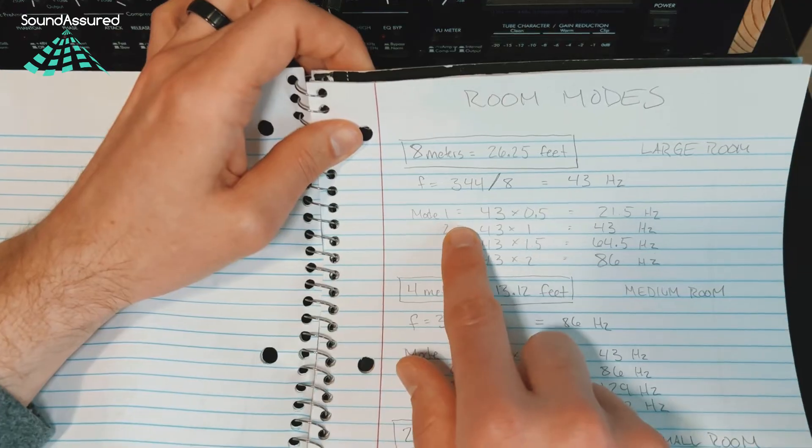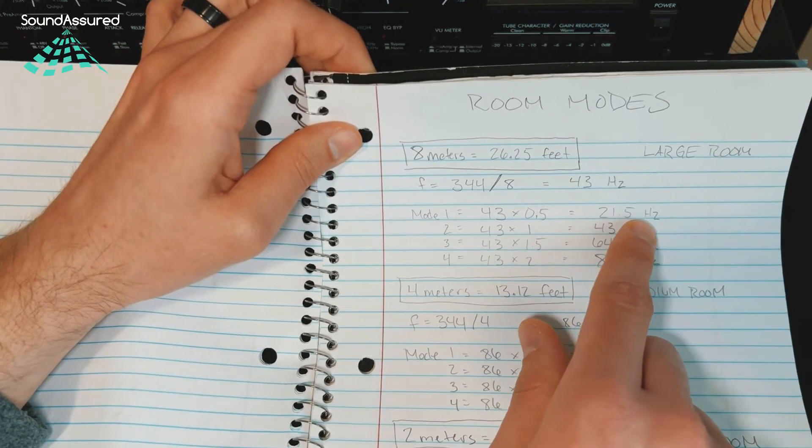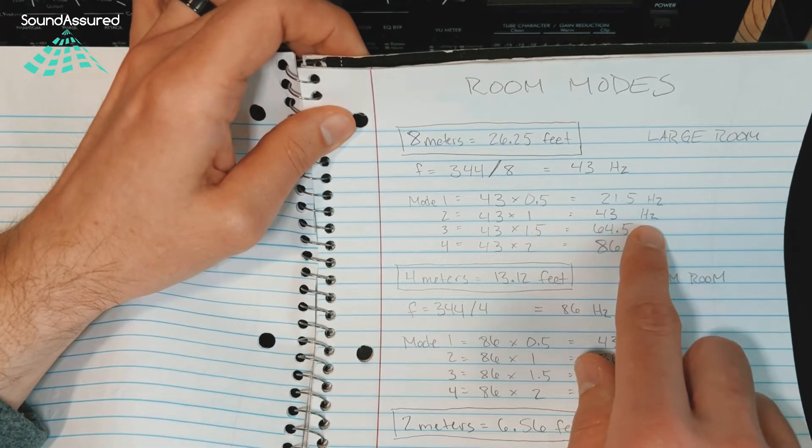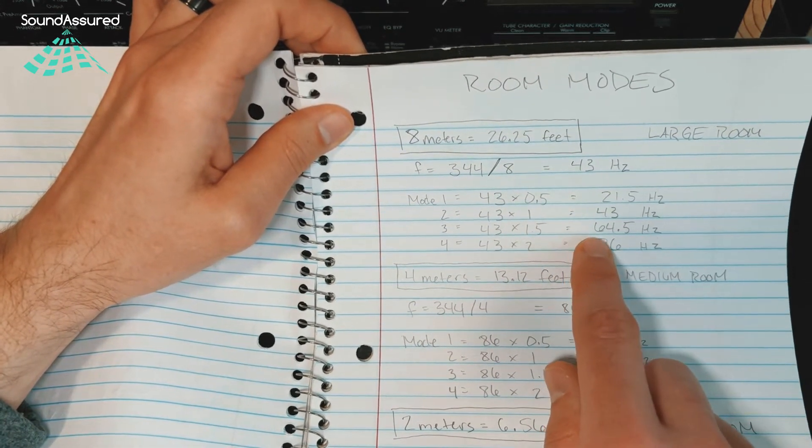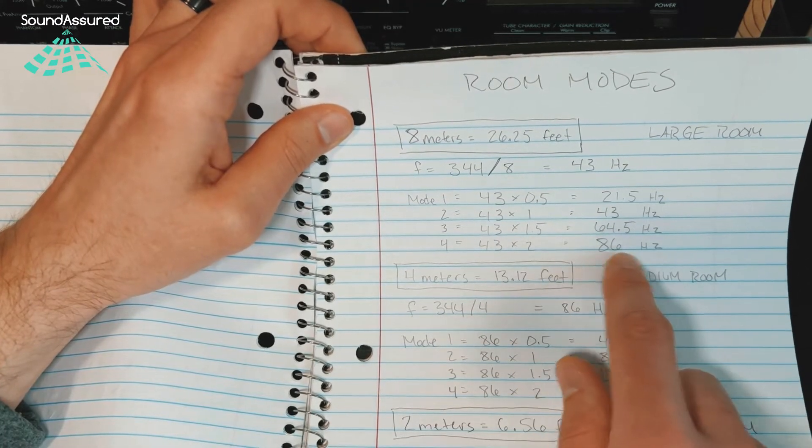So the first mode is 43 times 0.5, which is 21.5 Hertz. The second mode is 43 Hertz. Third mode is 64.5 Hertz. And the fourth mode is 86 Hertz.